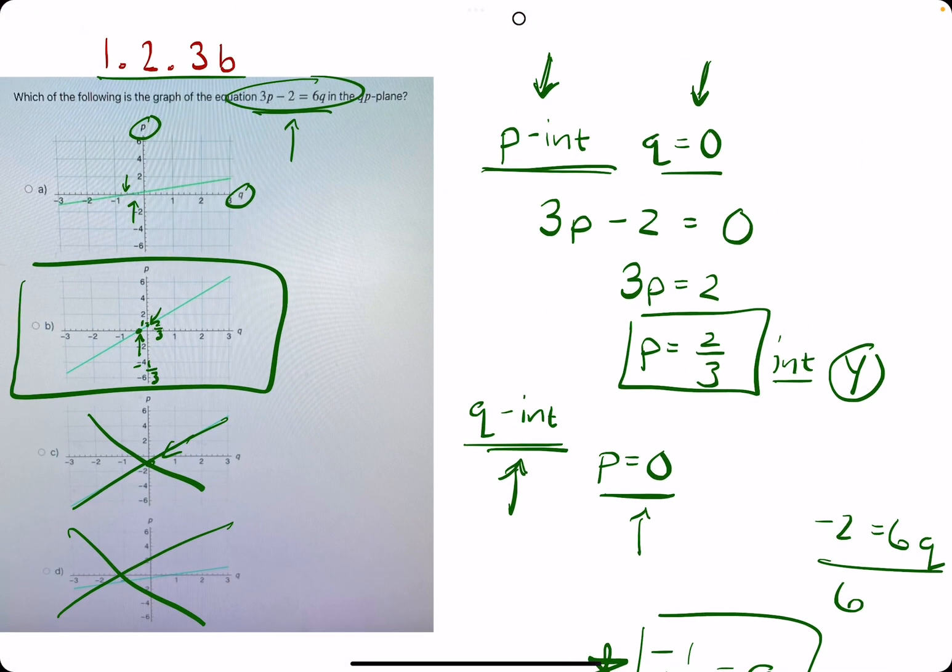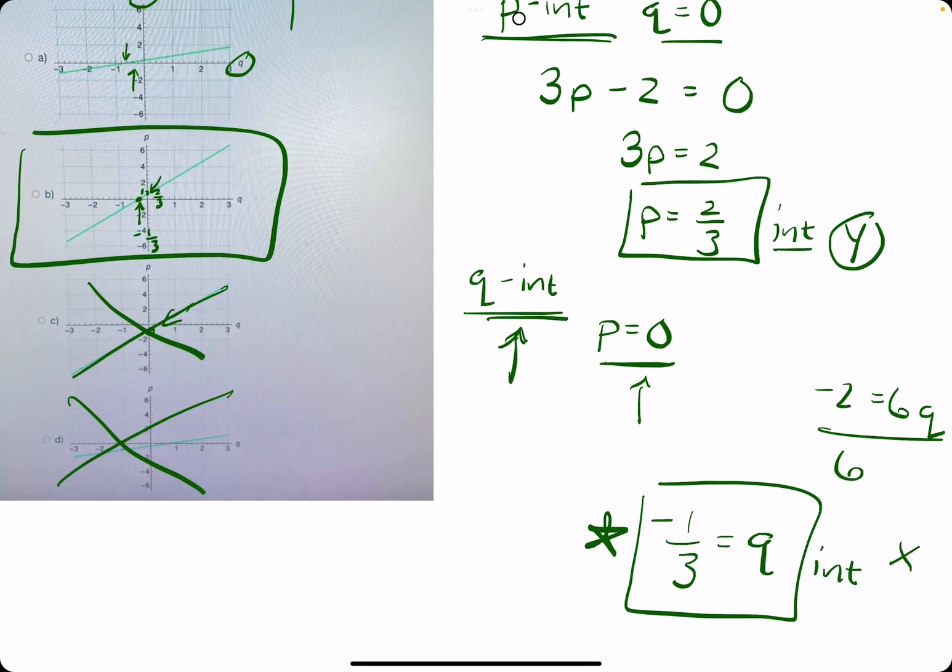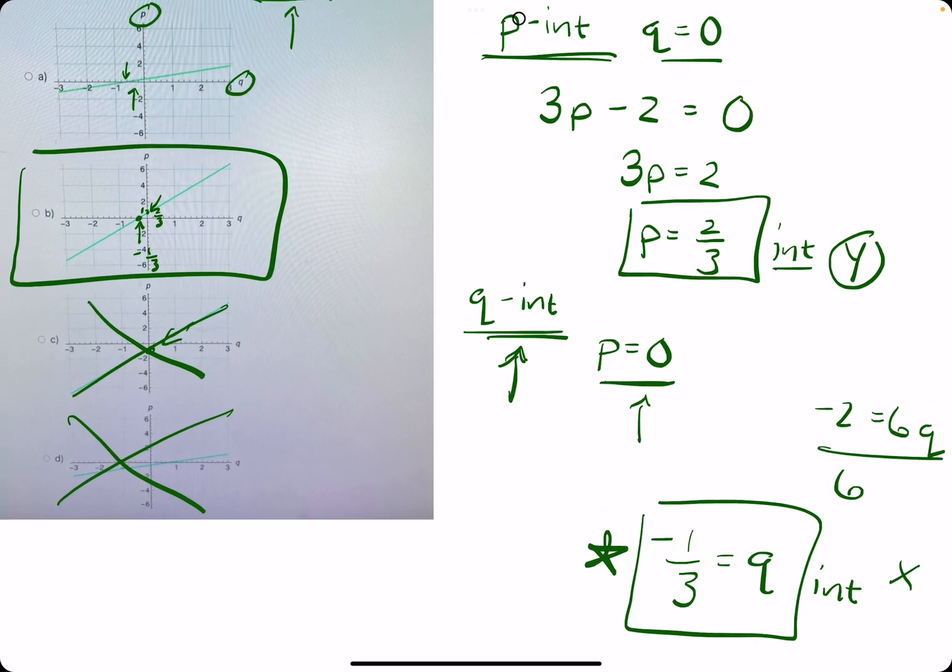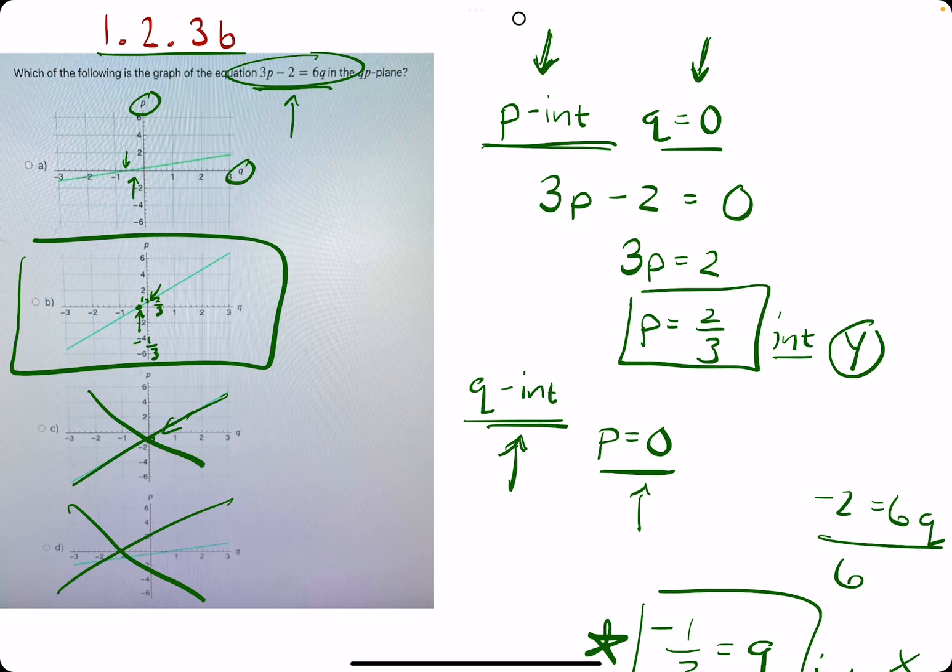I hope this makes sense. We find p-intercepts by plugging in q equals 0, and q-intercepts by plugging in p equals 0. Then we find the graph that has those intercepts.